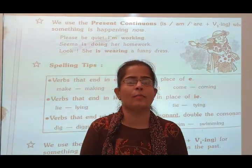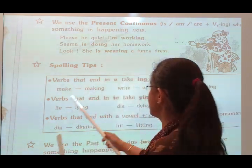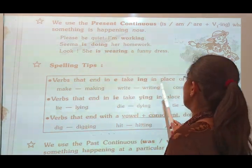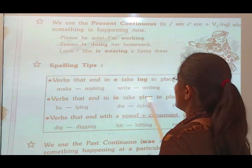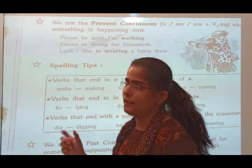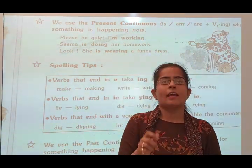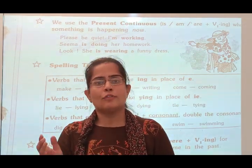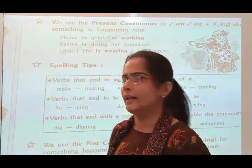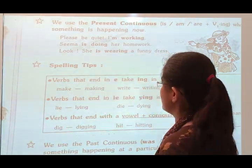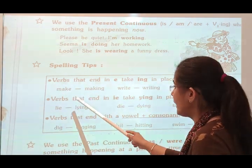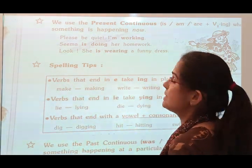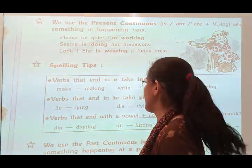Here are the rules. Rule 1: Verbs that end in 'e' take -ing in place of 'e'. If any verb's ending is 'e', when we convert it to the -ing form, we remove the 'e' and then add -ing. For example, 'make' — m-a-k-e — becomes 'making' — m-a-k-i-n-g.